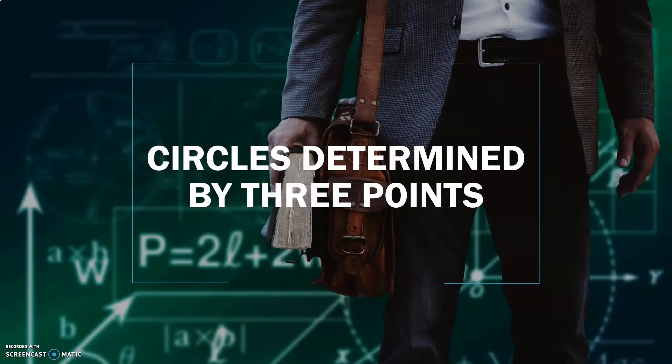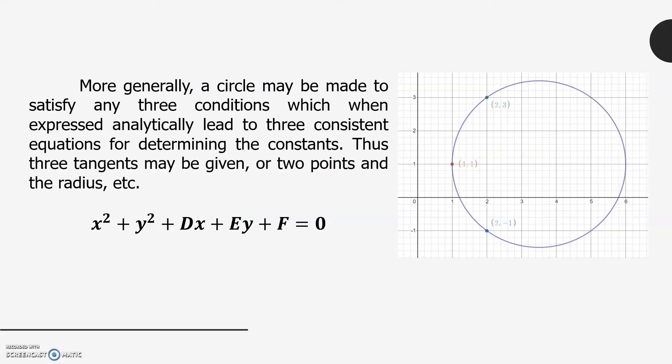Today, we are going to discuss about circles determined by three points. More generally, a circle may be made to satisfy any three conditions which, when expressed analytically, lead to three consistent equations for determining the constants. Thus, three tangents may be given, or two points and the radius. For this topic, we are going to determine the values for d, e, and f by using the three points and generating an equation for determining its values.